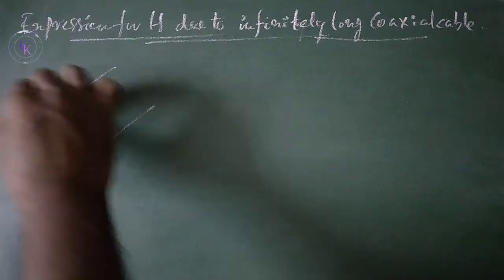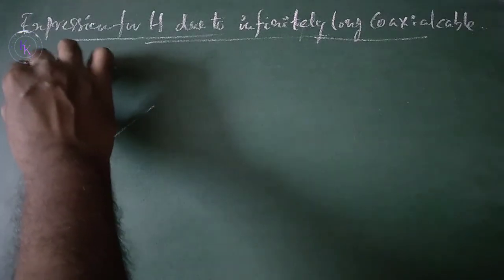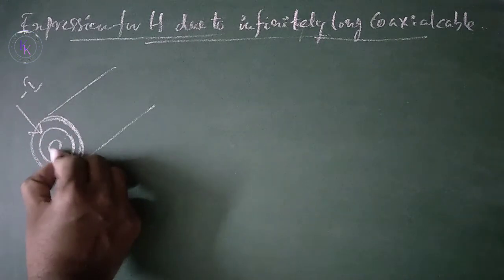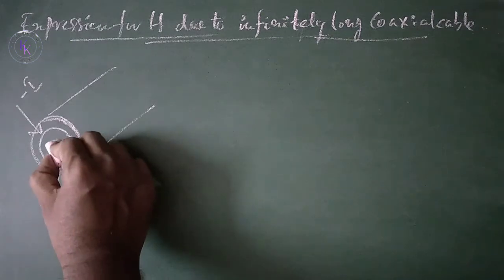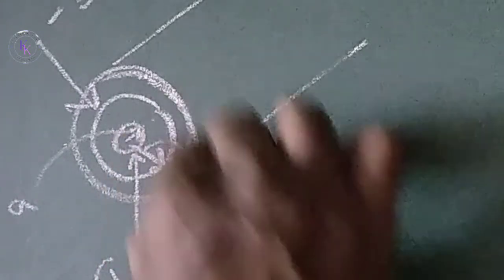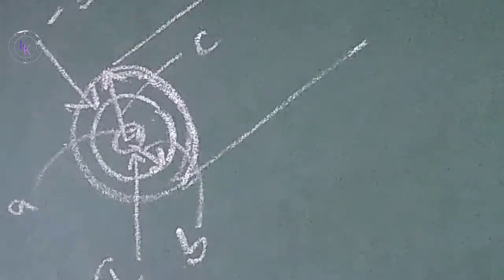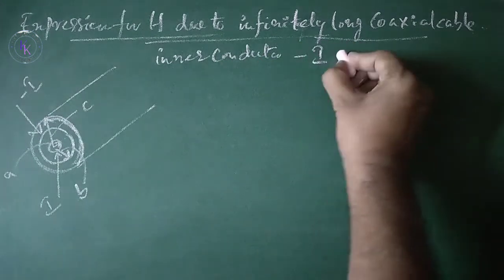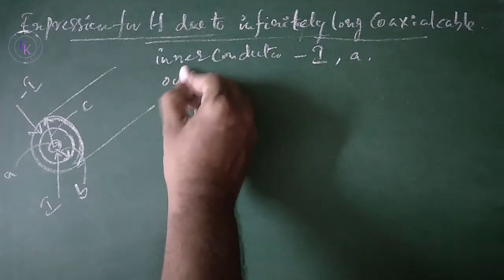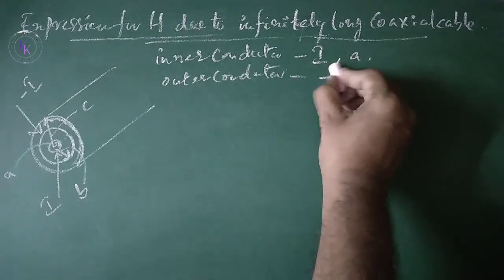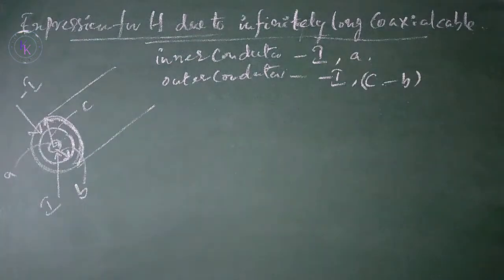The outer conductor is carrying minus I current. The inner conductor is carrying current I, with radius a. The outer conductor has radii b and c, carrying current minus I.